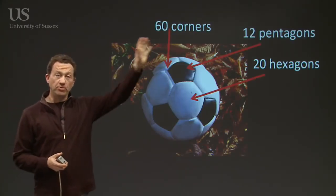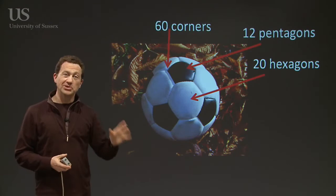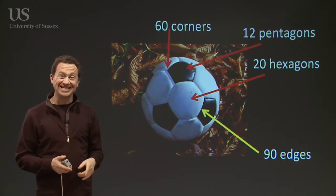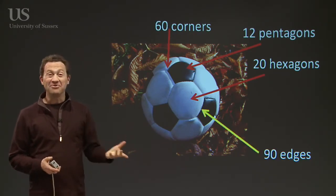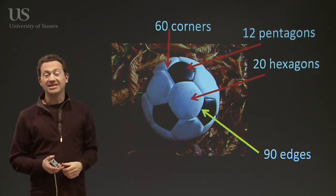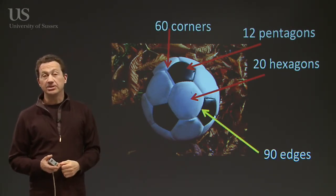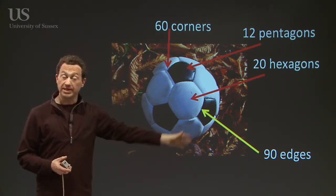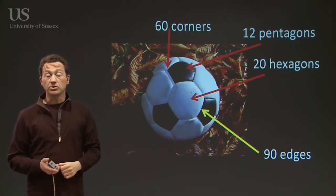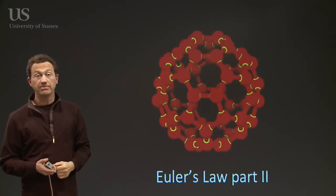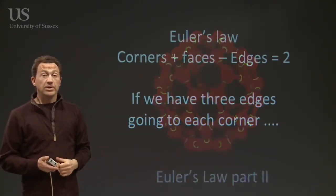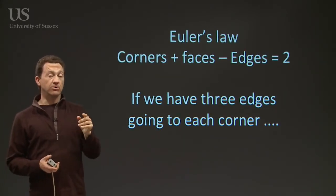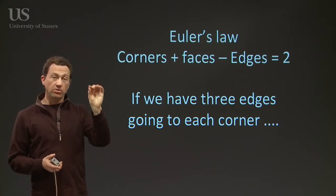So on the football you've got 60 corners, 12 pentagons, 20 hexagons, and now we've calculated 90 edges. And of course you can use this for the other fullerene cages, not just for the buckyballs.